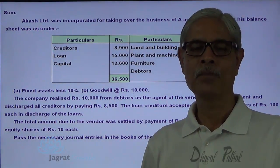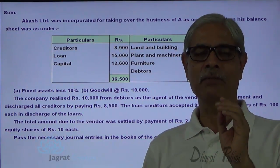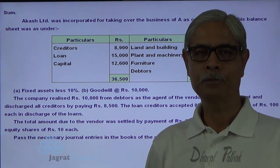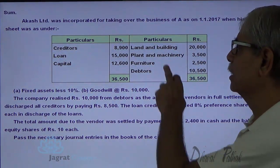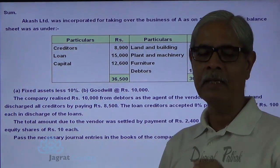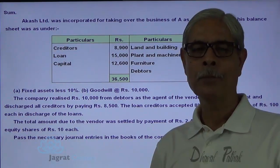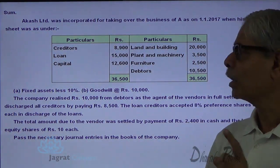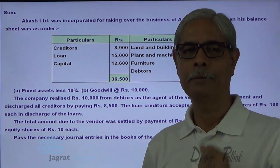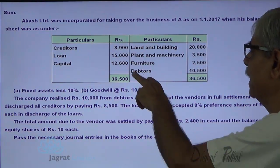In this sum, the company is incorporated to purchase the business of A. Generally, a business is made of assets, liabilities, and its reputation — the value of its earning capacity. The company has purchased land and building, plant and machinery, and furniture — all fixed assets at 10% less. For goodwill, the company has agreed to pay Rs. 10,000. Out of liabilities, the loan of Rs. 15,000 is being taken over and settled by giving preference shares. The company has not purchased debtors and creditors, but has agreed to collect the debtors on behalf of Mr. A, acting as agent.